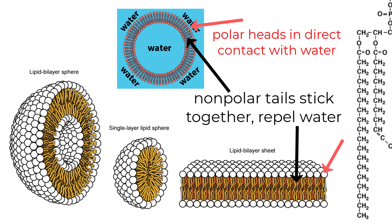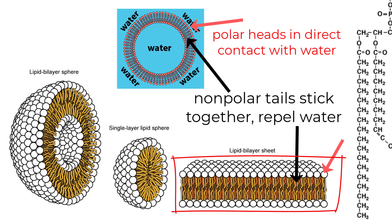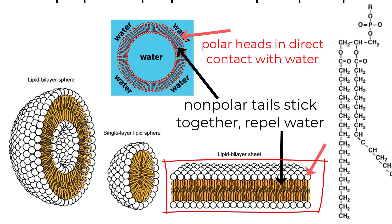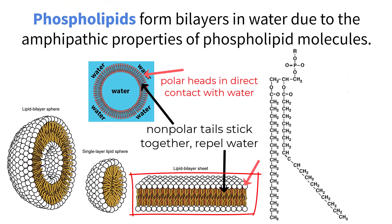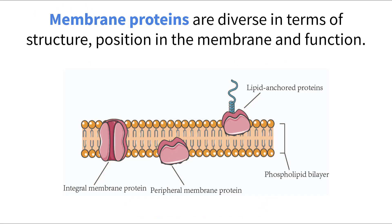Put enough of these molecules together, and a double membrane structure is created that can separate and completely enclose internal components from the outside. This is our cell membrane. While the cell membrane has many phospholipids that make up its structure, they are not the only molecules that are part of the system.